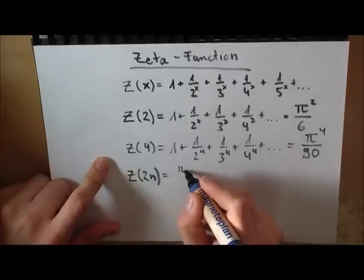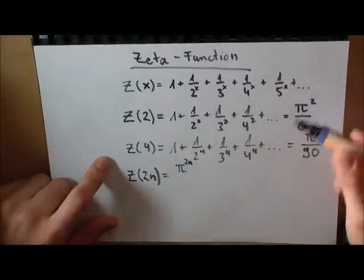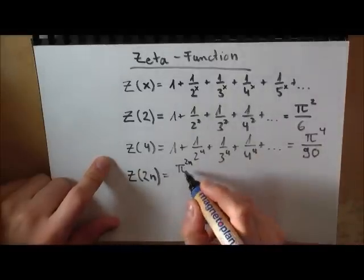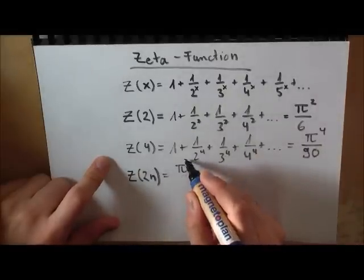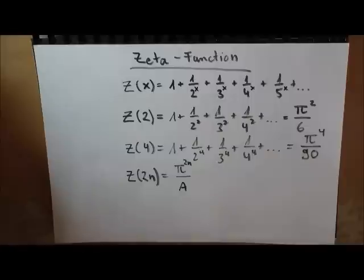And I can actually give you some hint to that. If you didn't see that, this was 2, this was 4, and actually if this is 2n, we get something with pi to the 2n and some other numbers here. But I won't tell you that because I want you to watch my videos. So this is the first step—we just had a look at the zeta function.